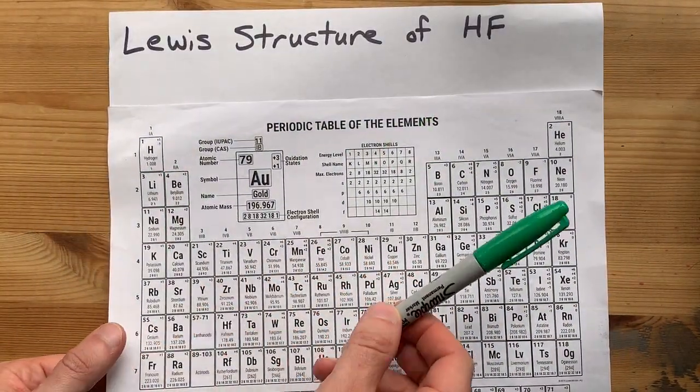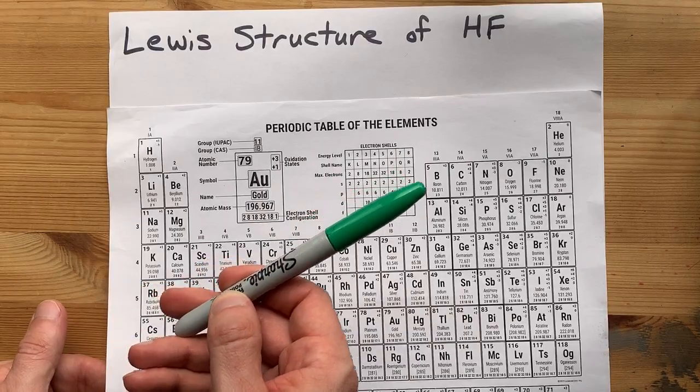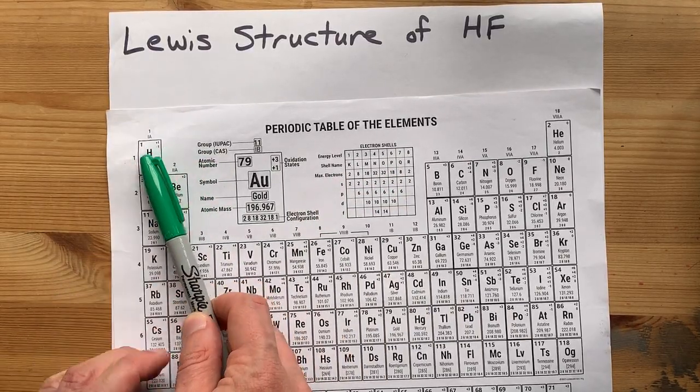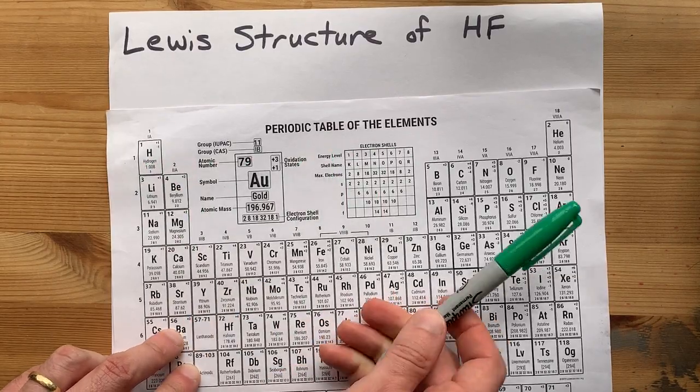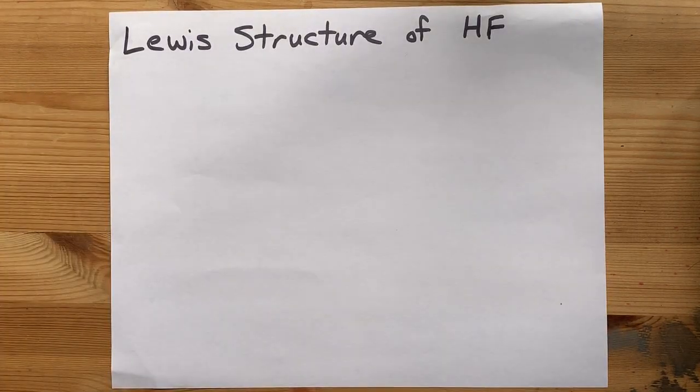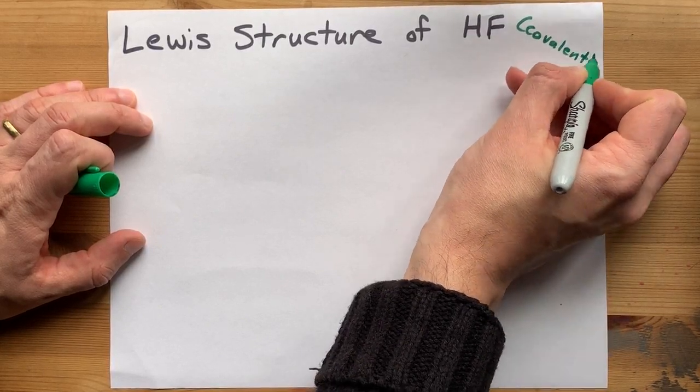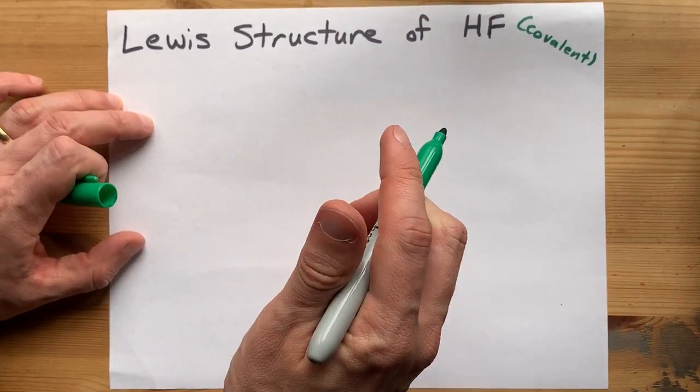This is easy if you know how many electrons each of them brings. Hydrogen, even though it comes from this side of the periodic table, is a non-metal, and so is fluorine. When two non-metals get together, they form a covalent compound, which means they share electrons.